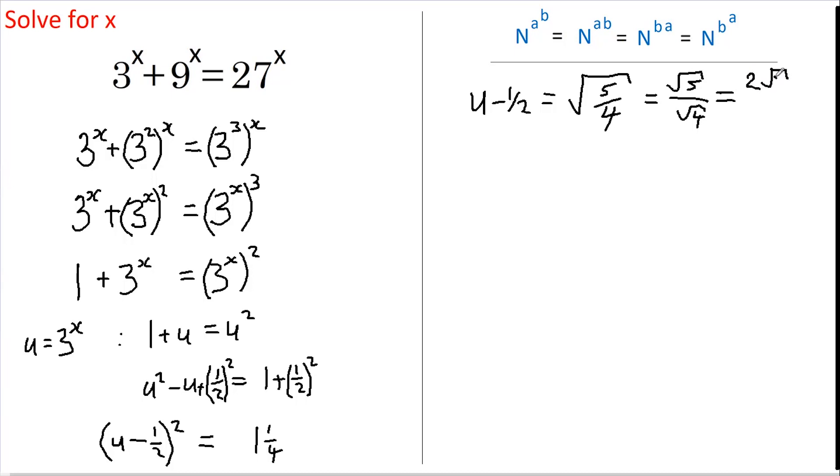We get 2 root 5 over 4, or just root 5 over 2. u therefore equals 1 half plus or minus root 5 over 2, or we could write this as 1 plus or minus root 5 all over 2. And on this side, I can change it back to 3 to the power of x.